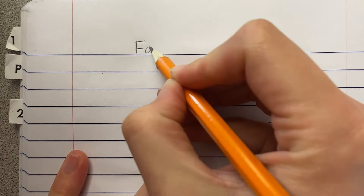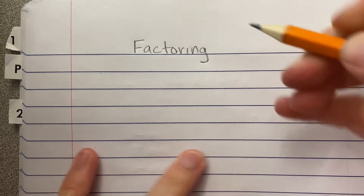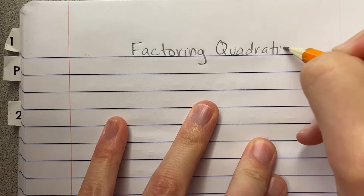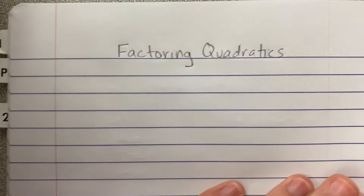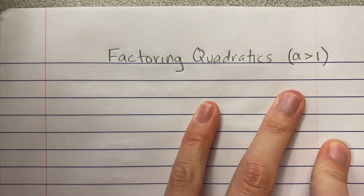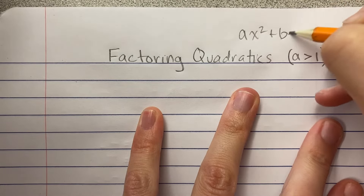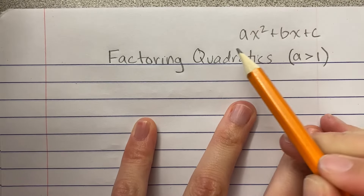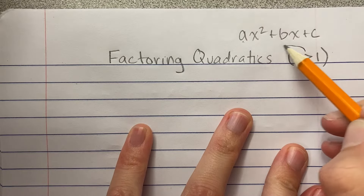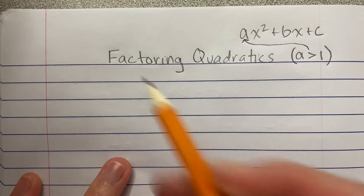All right, here we go. This is one of our most important topics and also one of our hardest. We're still factoring quadratics, but the difference now is that in ax²+bx+c, the value of 'a' is going to be more than one — not just one x squared. That 'a' is now going to be a number other than one, and that makes it a little bit harder.